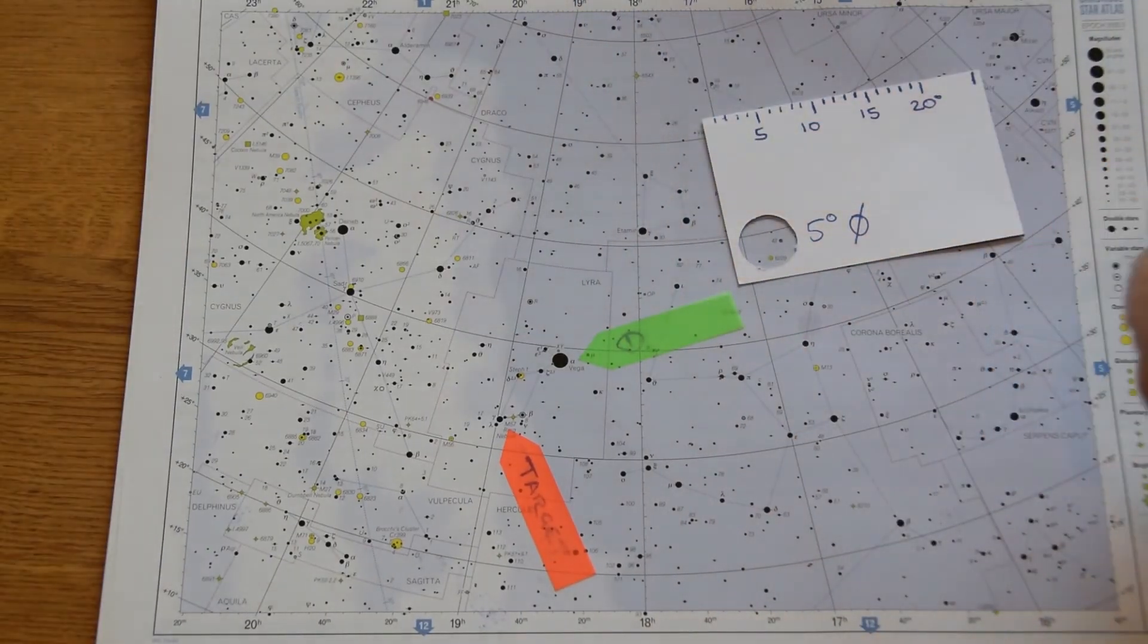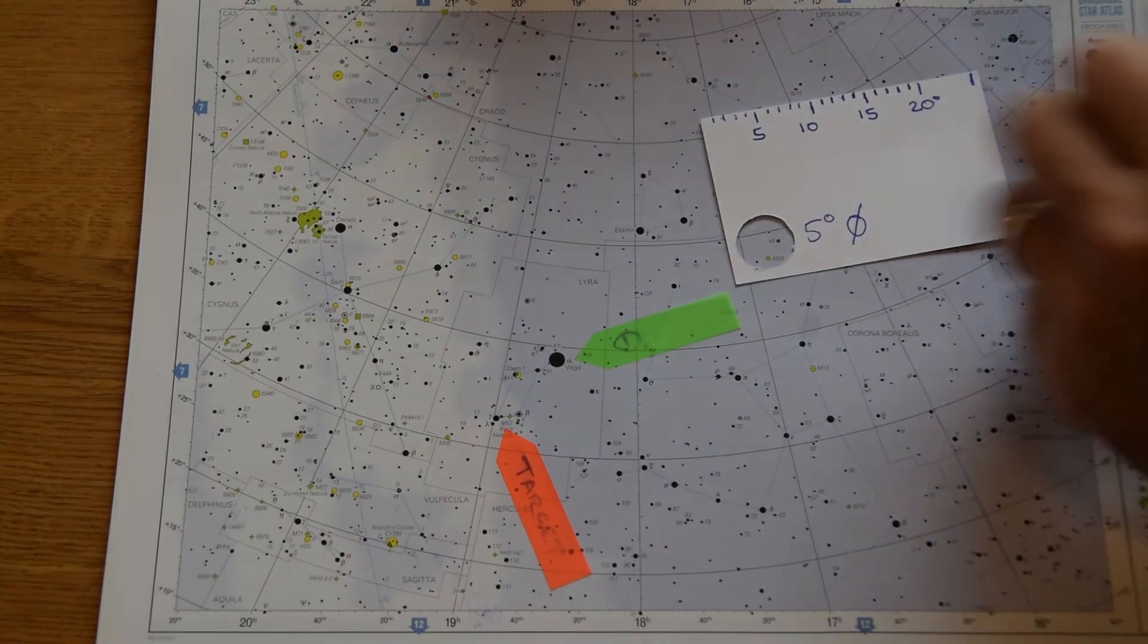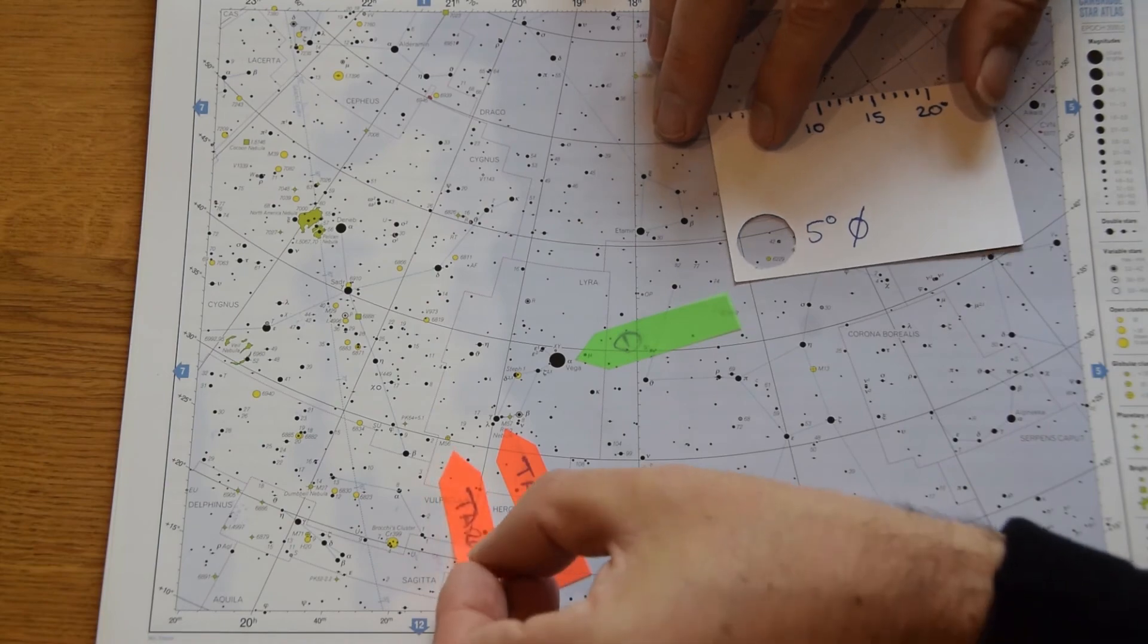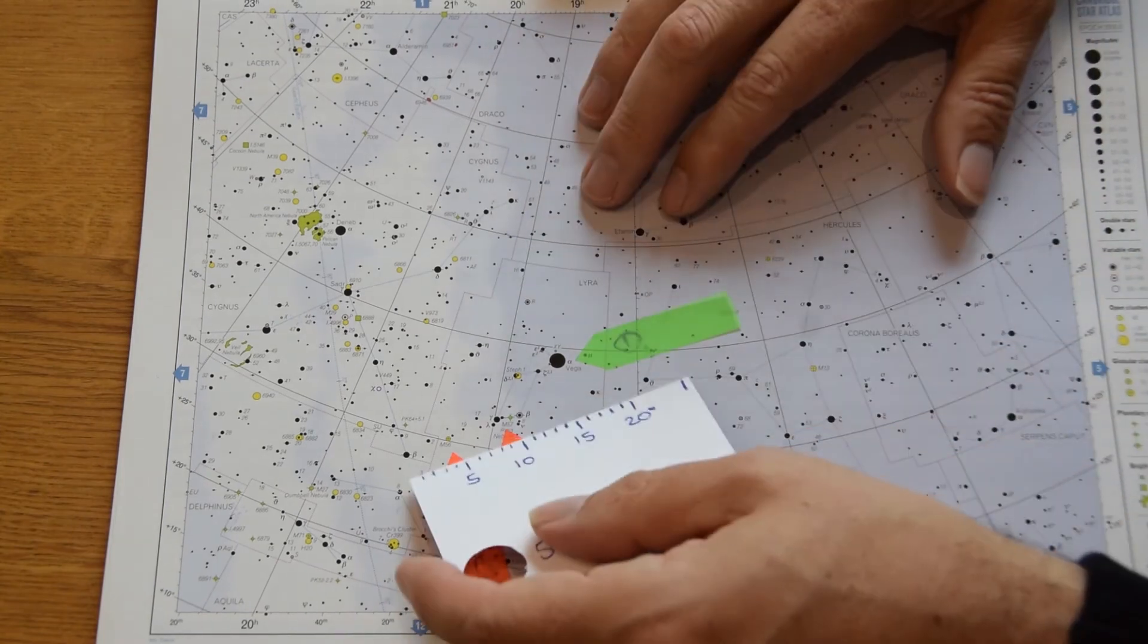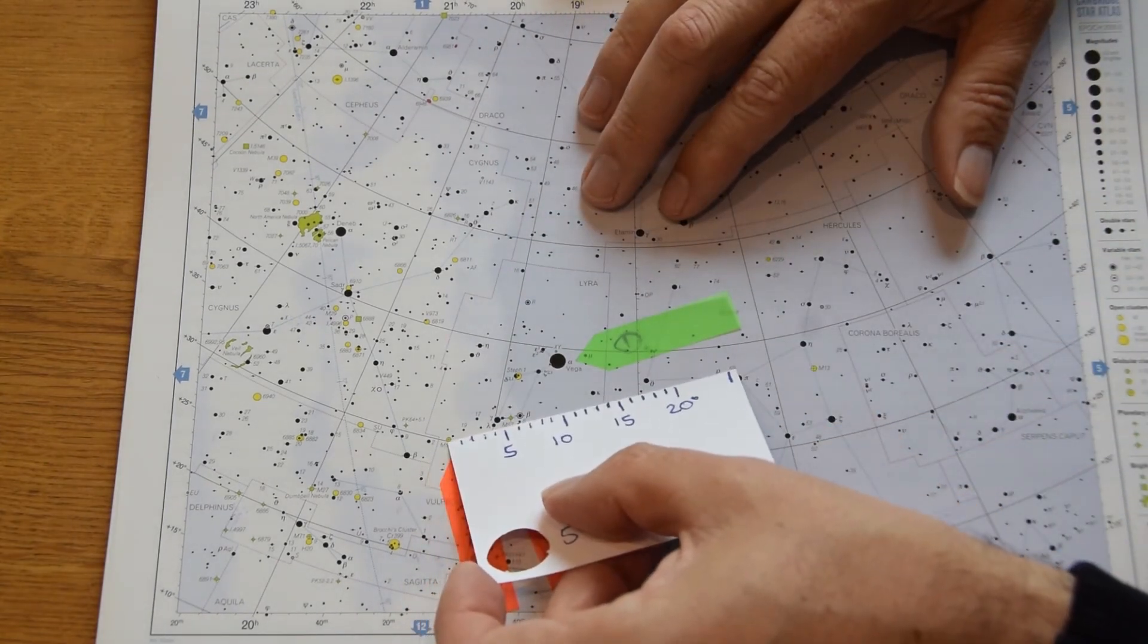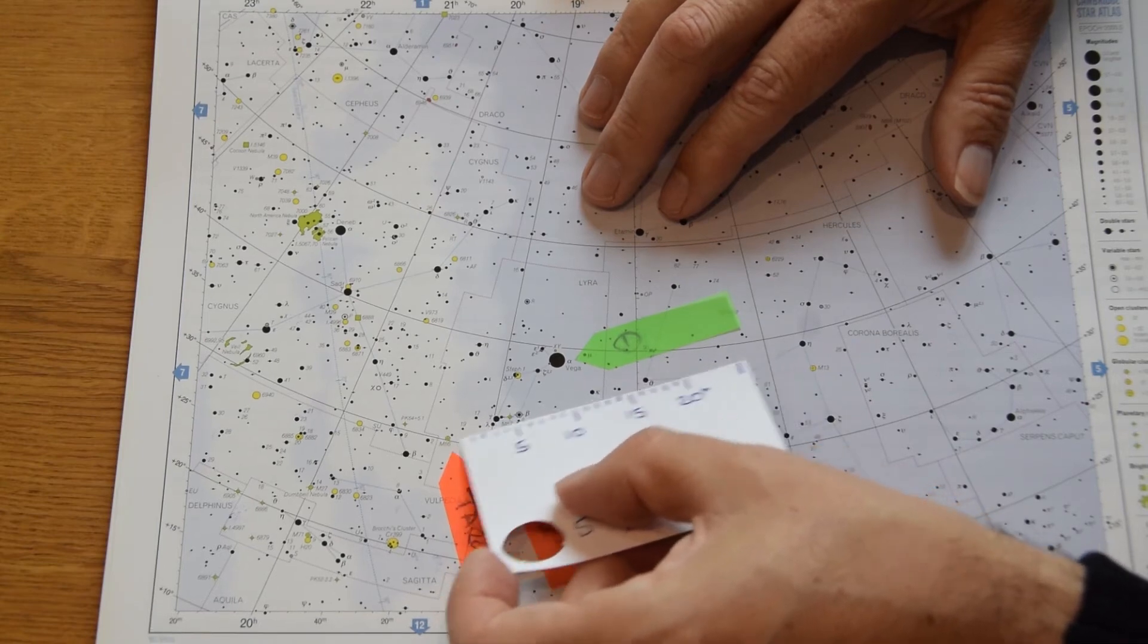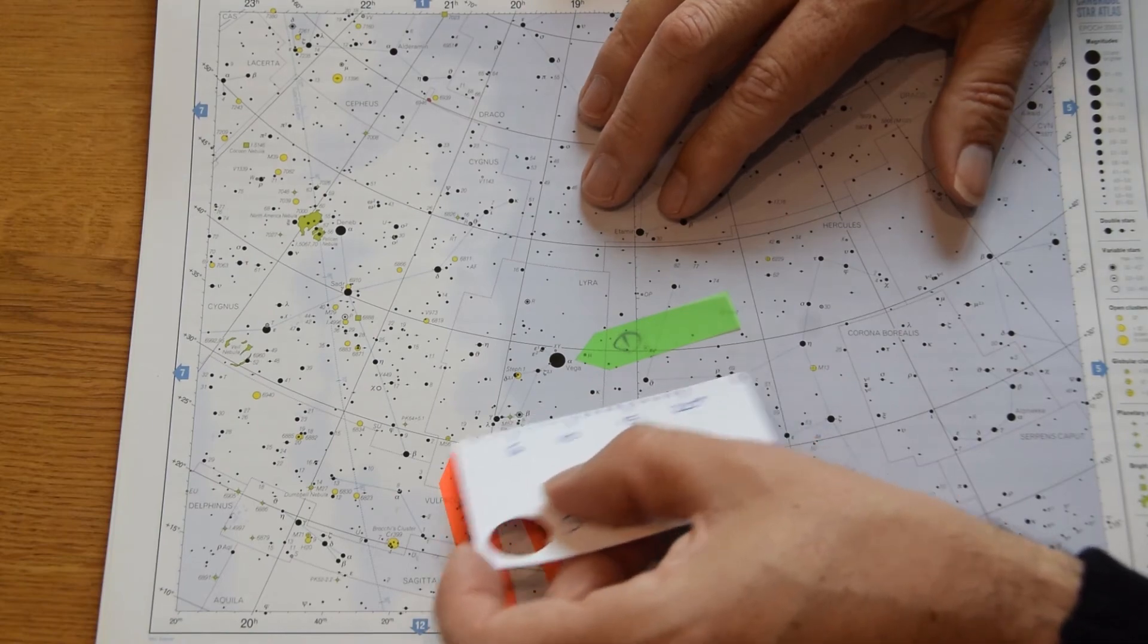Okay whilst we're in the region of this we could also look at another one as well and that's the globular cluster M56. So as you can see it's not very far away from Lyra and in fact if I just use my tool you'll see it's about five degrees which is three fingers away from this bottom left hand star. So how do we find it?